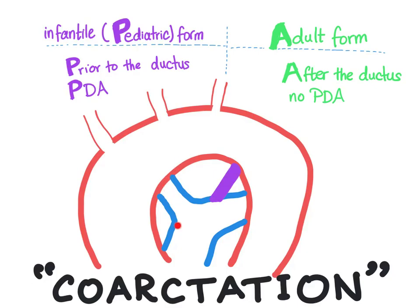Coarctation of the aorta — coarctation basically means narrowing. We have two types: the infantile form and the adult form. For simplicity, we'll call the infantile form the pediatric form. In the pediatric form, the coarctation or narrowing will occur prior to the ductus. So the aorta will narrow here, before the ductus.